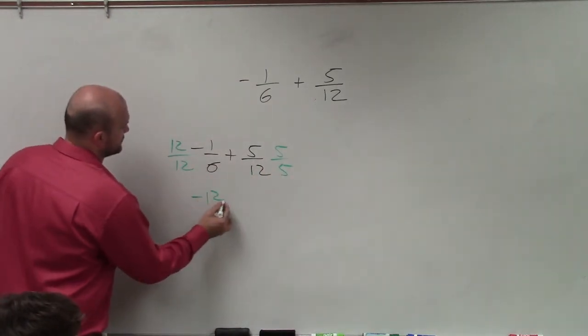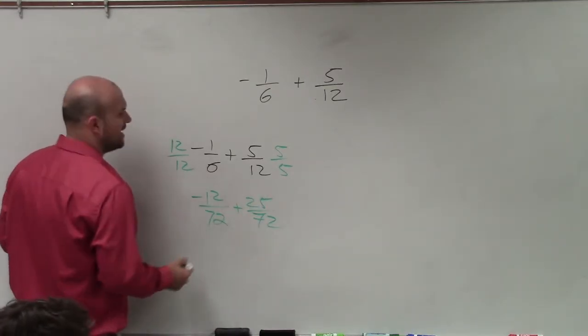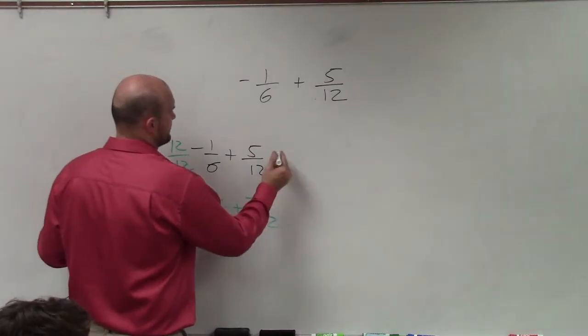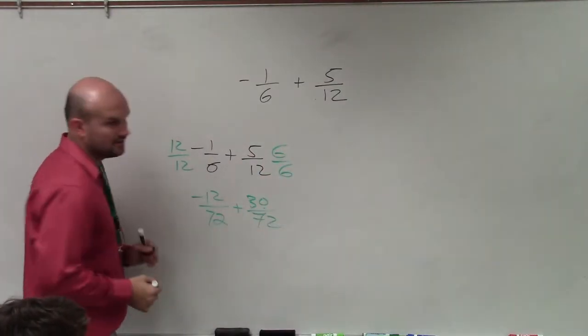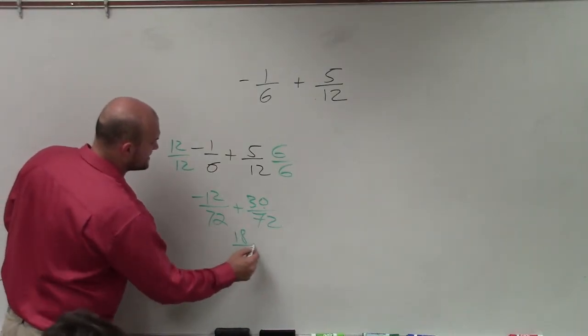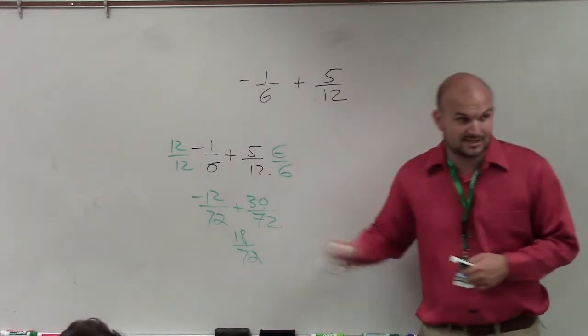So I'd have negative 12 over 72 plus 25 over... 6 and 6, so that would be 30, right? And then when you compute this, you would have a positive 18 over 72, which is fine. When you simplify this, you're going to get the same answer.